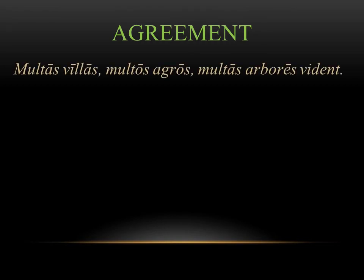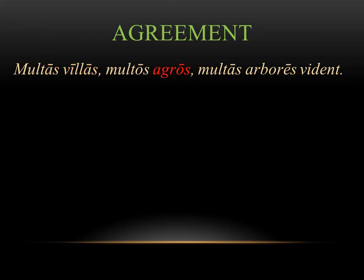Let's take a look at an example sentence to see how this works. The sentence means they see many houses, many fields, and many trees. The first word is modified by the adjective multas, which is a first and second declension adjective. This makes sense because the spellings have the same exact ending — multas and villas are both feminine accusative plurals. Next we look at agros, which means fields, again modified by the adjective many. In this case it's masculine accusative plural, so the ending switches to OS, as in multos agros. First and second declension adjectives have the same endings as first and second declension nouns.